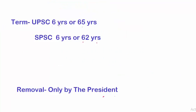The term of the members of UPSC is six years or 65 years, whichever is earlier. This means when they attain the age of 65 years, even if they have not completed their six-year term, they retire. In State Public Service Commission, the age of retirement is 62 years. This is the only difference between SPSC and UPSC.